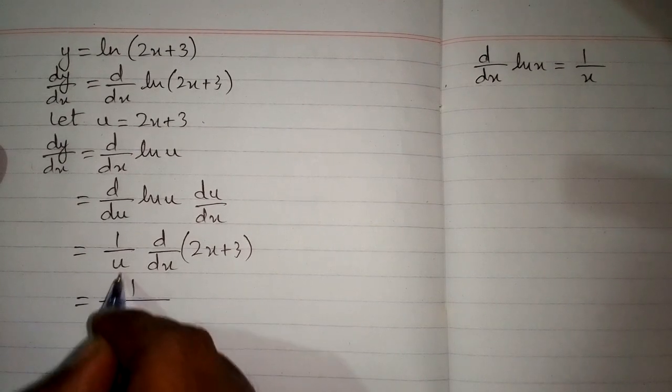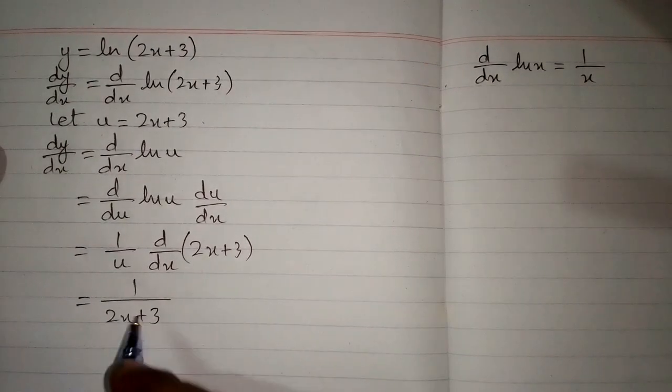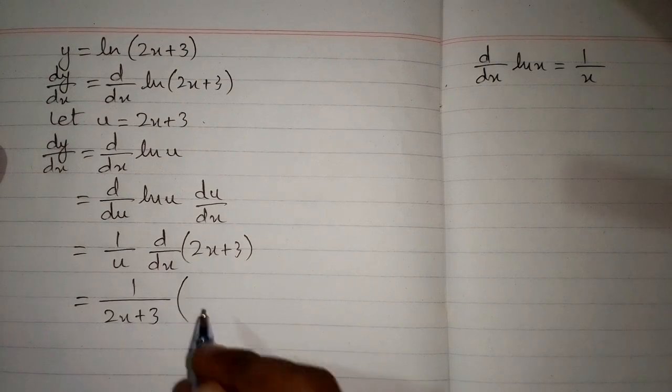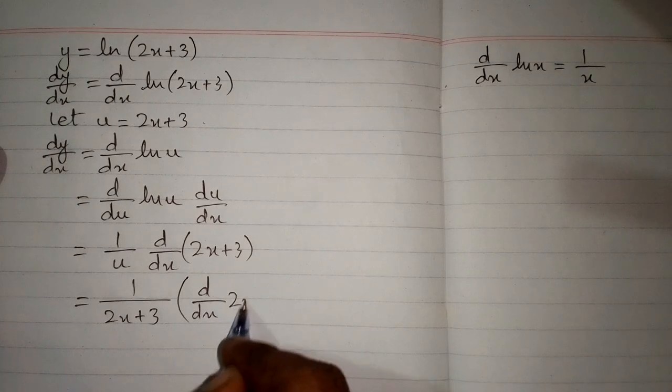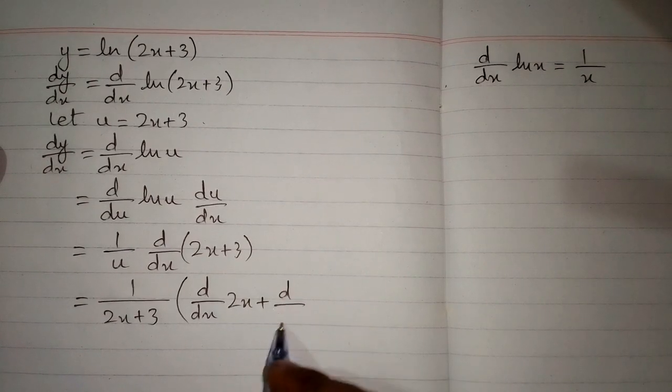Now we put the value of u which is 2x plus 3 and apply the derivative on both terms. So we have d by dx of 2x plus 3.